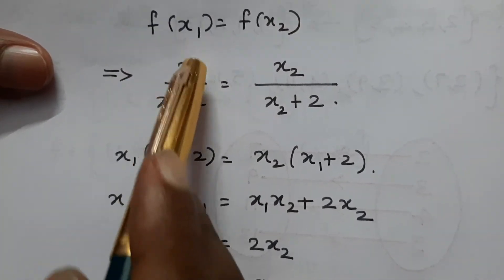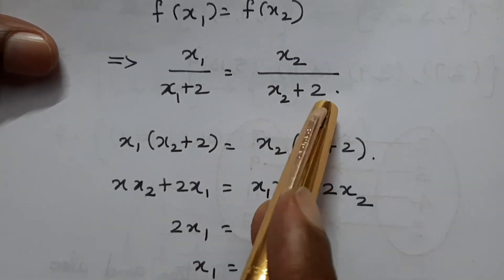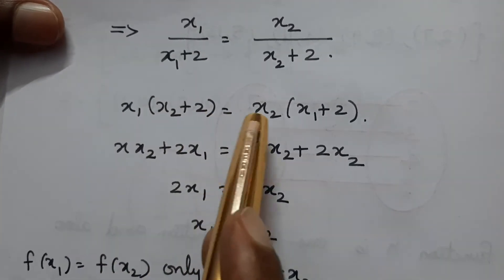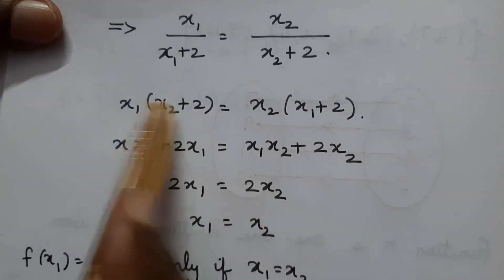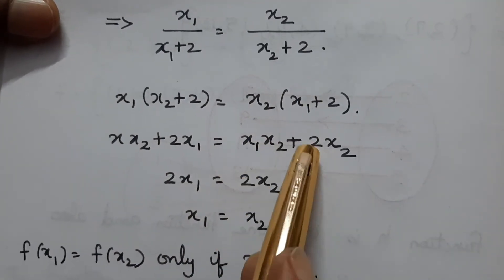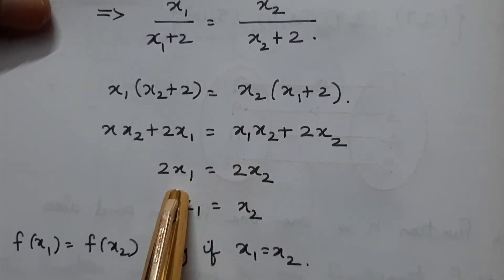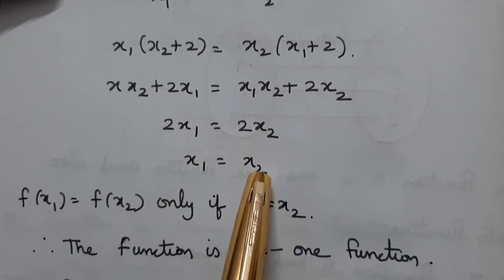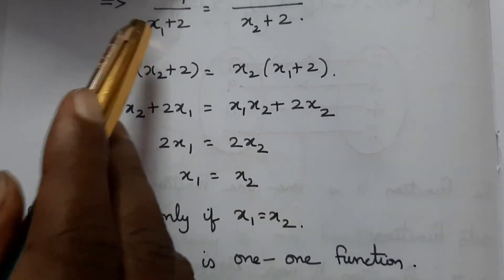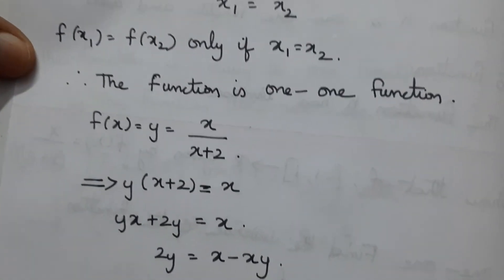To prove one-to-one: assume f of x1 equals f of x2. Then x1 divided by x1 plus 2 equals x2 divided by x2 plus 2. Cross-multiplying: x1 times x2 plus 2 equals x2 times x1 plus 2. Simplifying, 2x1 equals 2x2, so x1 equals x2. Therefore the function is one-to-one.